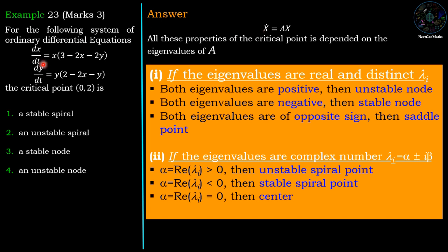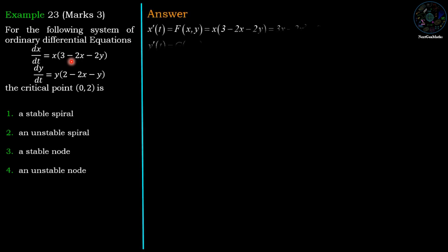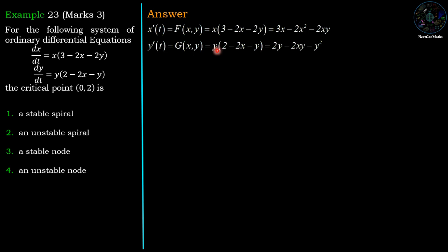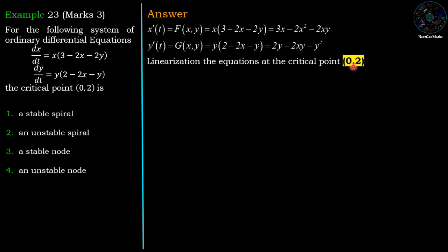In our example, however, we have a non-linear system. So first we try to convert it into a linear system. We write x' = f(x, y) and y' = g(x, y), and we linearize both equations at the critical point (0, 2) which is given in the example.